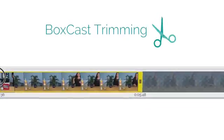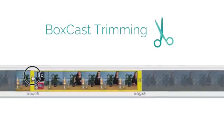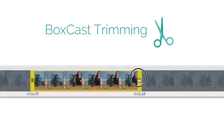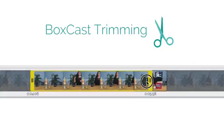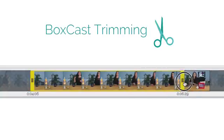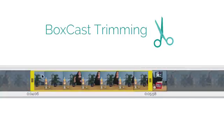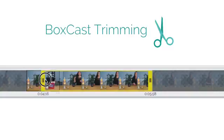BoxCast Trimming allows you to adjust the start and stop times of your archived streams, just in case you ever find yourself with unnecessary video at the beginning or end of your event.